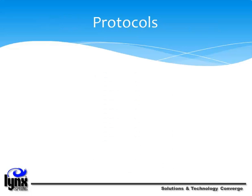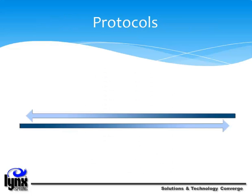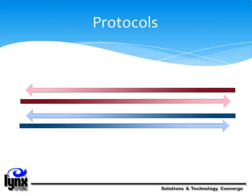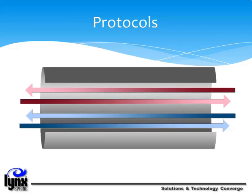Protocols are standards that allow computers to communicate. A protocol defines how computers identify one another on the network, the form the data should take in transit, and how this information is processed once it reaches its final destination. Protocols also define procedures for handling lost or damaged transmissions or packets. TCP/IP, IPX for Novell Netware, and AppleTalk for Macintosh computers are the main types of network protocols in use today. Building automation systems use their own protocols, such as BACnet, LonWorks, and Modbus. Although each network protocol is different, they all share the same physical cabling. This common method of accessing the physical network allows multiple protocols to peacefully coexist — a concept known as protocol independence.